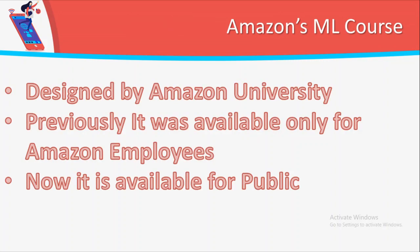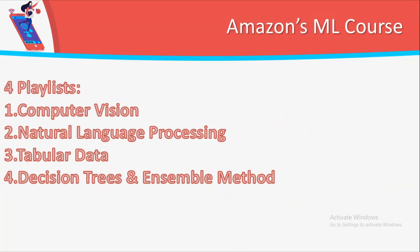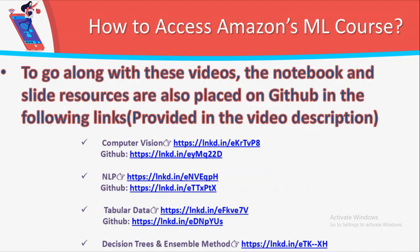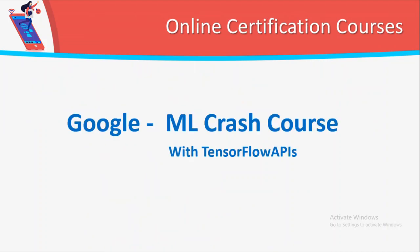The Amazon ML course is designed by Amazon University, originally for Amazon employees, but now available to the public. It has four playlists on ML-related topics: computer vision, natural language processing, tabular data, and decision trees and ensemble methods. These courses help you learn the principles of ML with hands-on practical examples. All videos, notebooks, and slide resources are placed on GitHub, and all links are available in the video description.